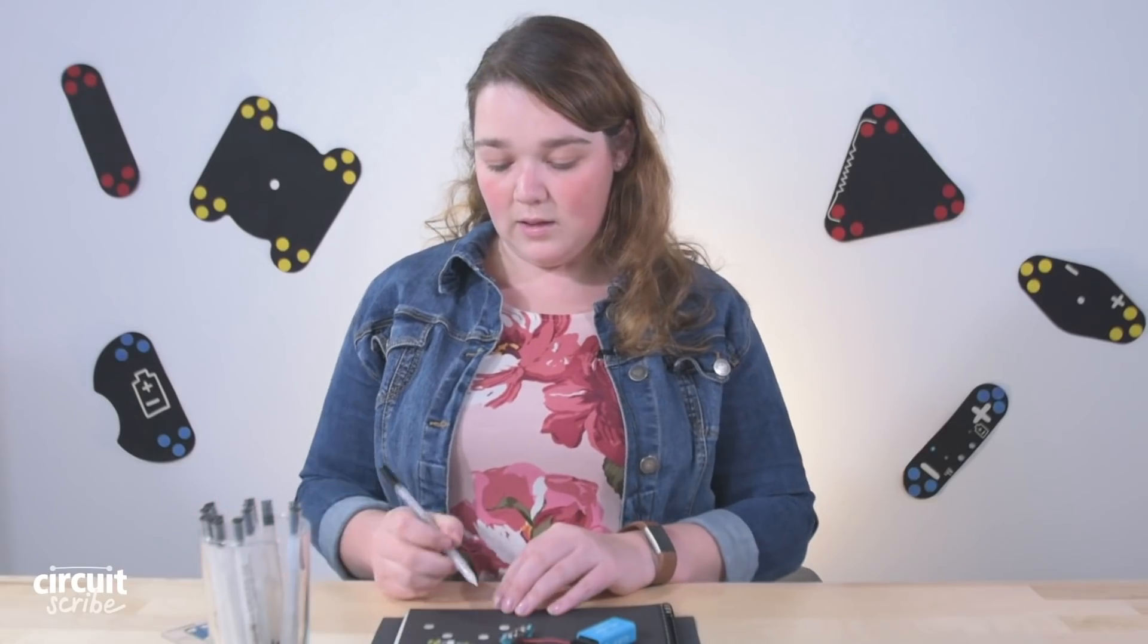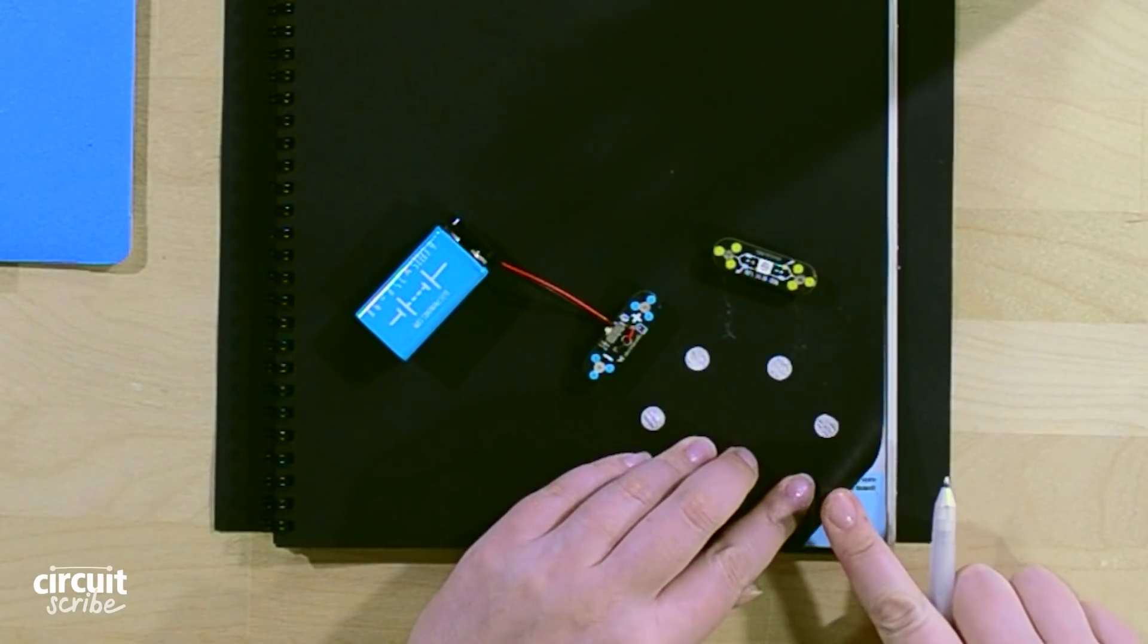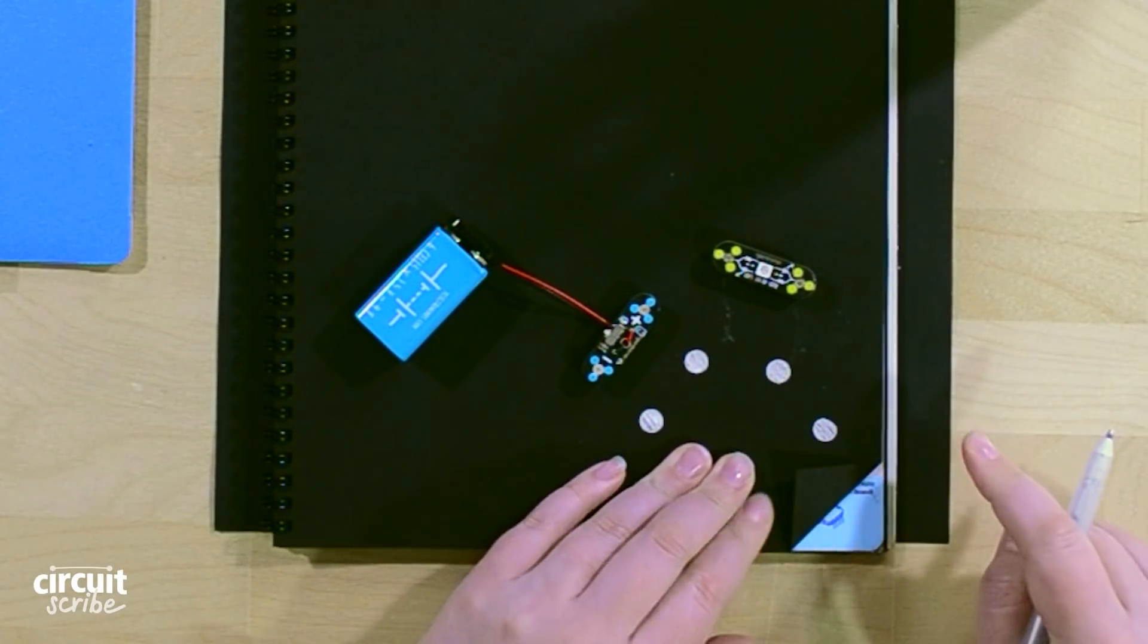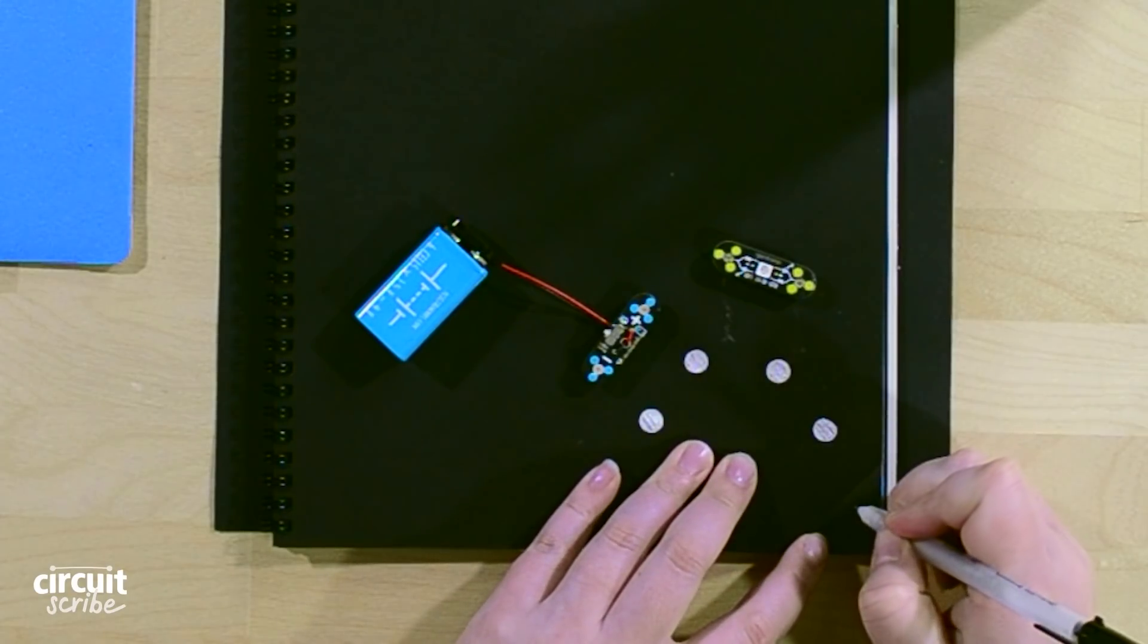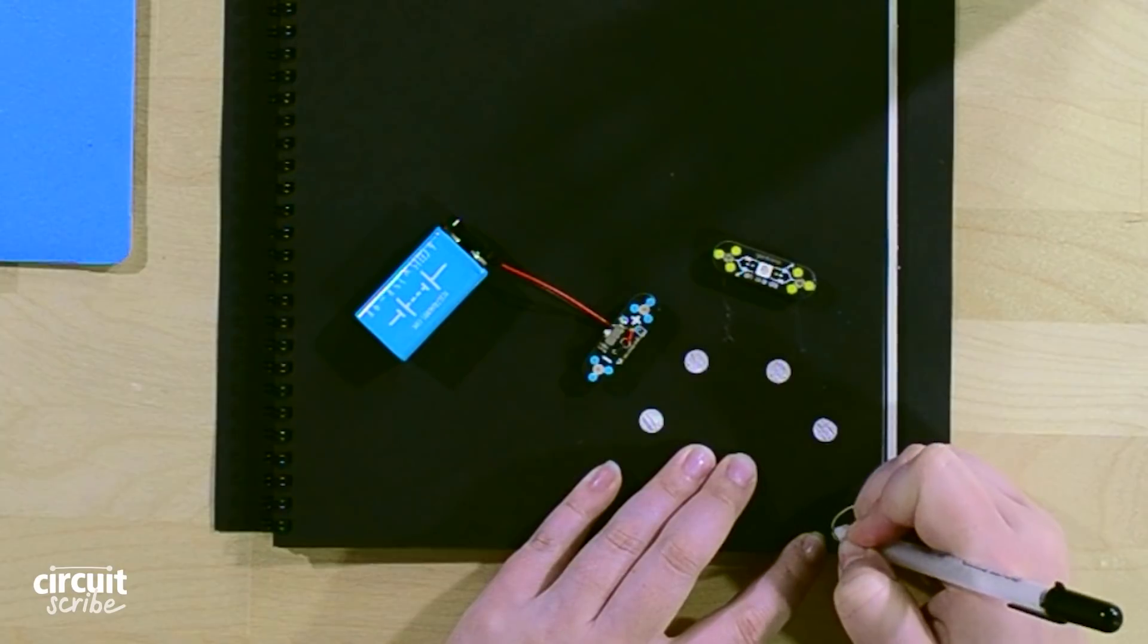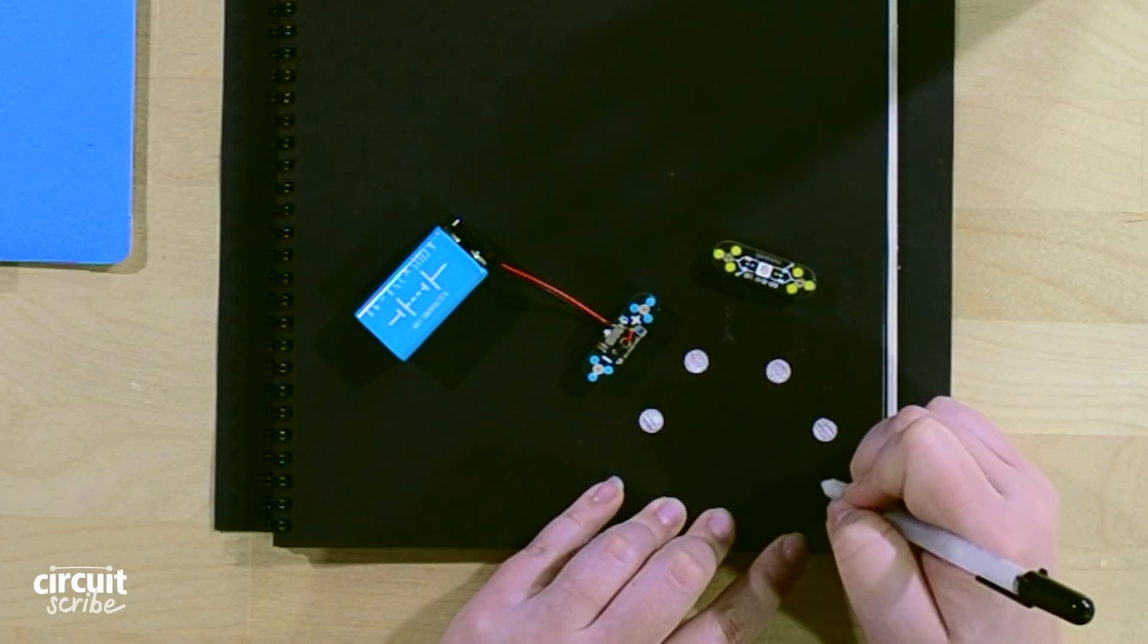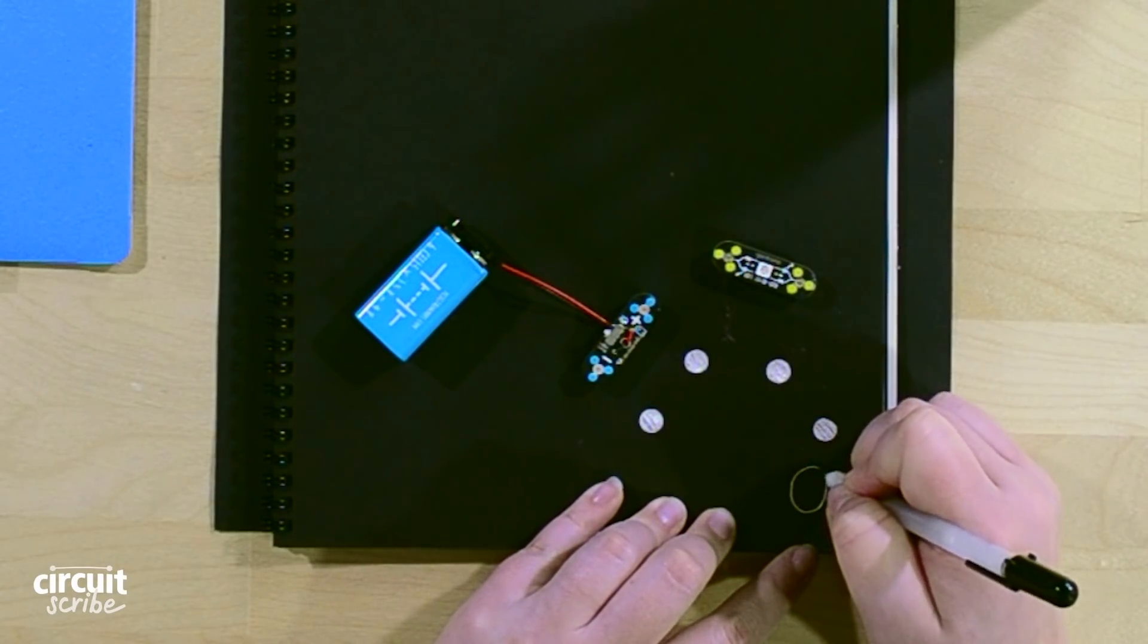And then instead of drawing a spot for a normal switch, what I'm going to do is fold my paper over like this so I can see that crease, and then I'm going to draw a big pad right here and then a big pad right here.